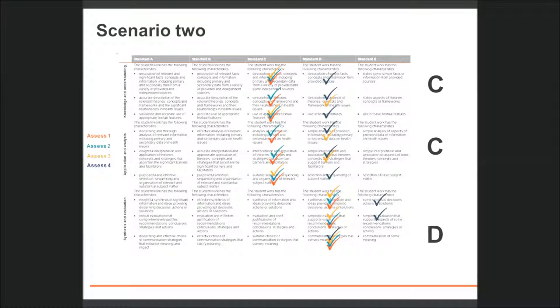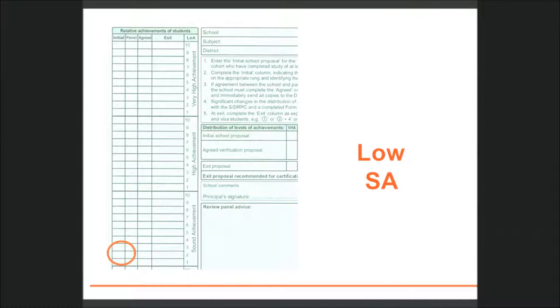The folio meets the syllabus requirements for sound achievement. Like the first example, this folio is also a sound achievement. However, the school might like to record finer-grained information to inform them in making a relative achievement decision. Schools might do this by allocating pluses or minuses to their decisions about dimensions. So in this case, in both dimensions 1 and 2, which have been judged on-balance to be C, in order to represent and reflect the evidence matched to D descriptors, the school might choose to record this as C-. In the third dimension, although there is some E evidence, the school has determined that the best on-balance decision is a D. So an appropriate decision might be to place the folio at low, or towards the bottom of sound achievement.